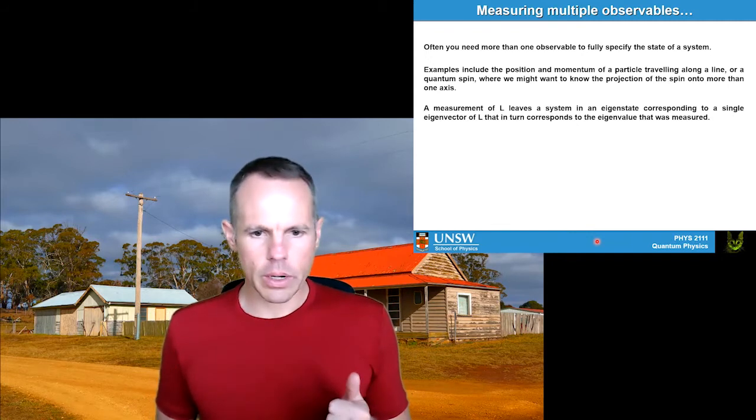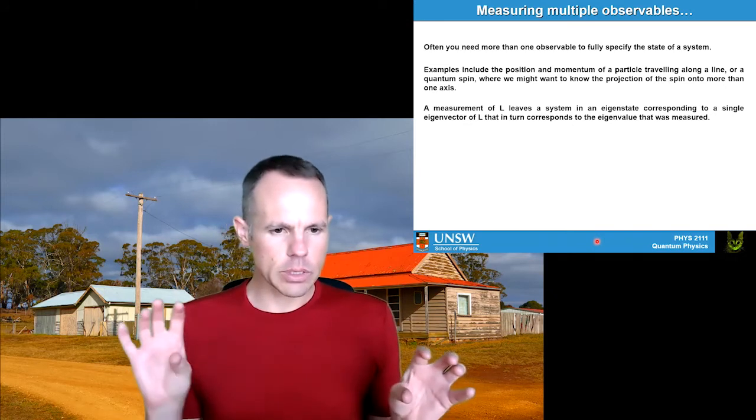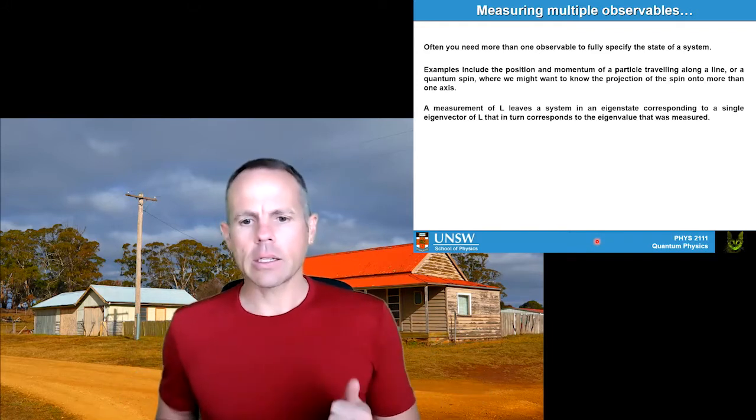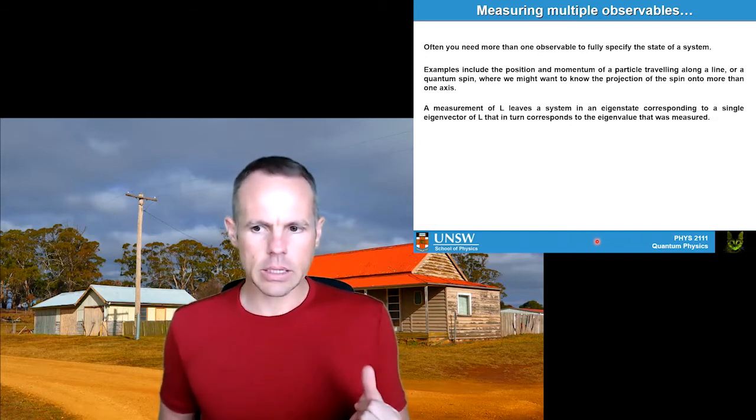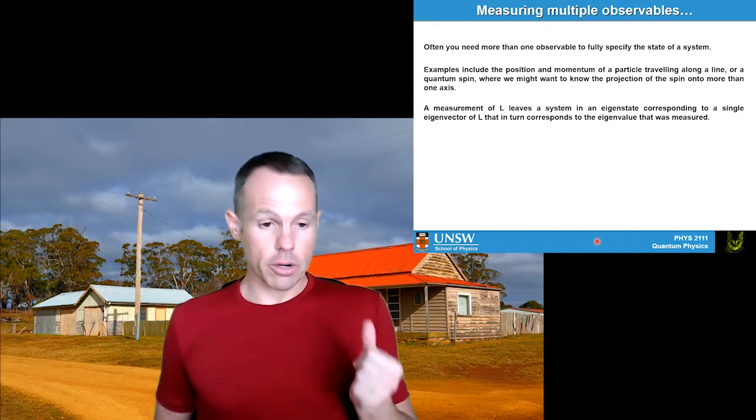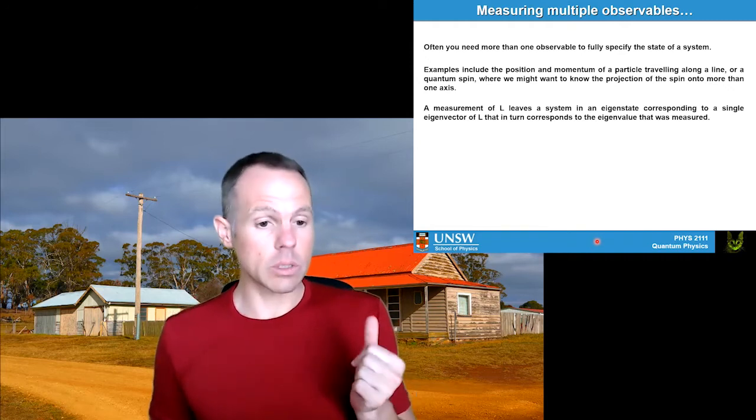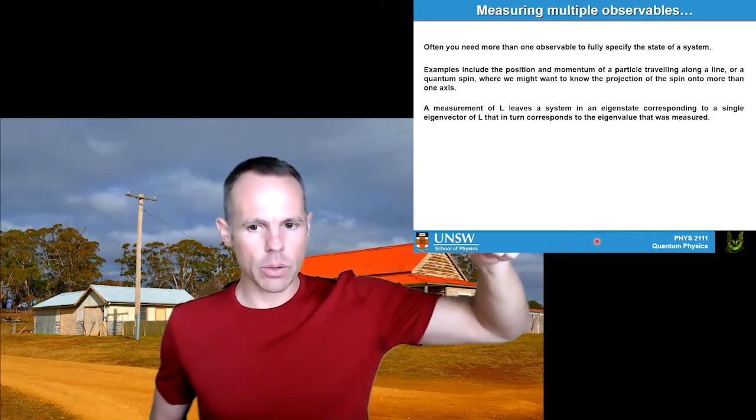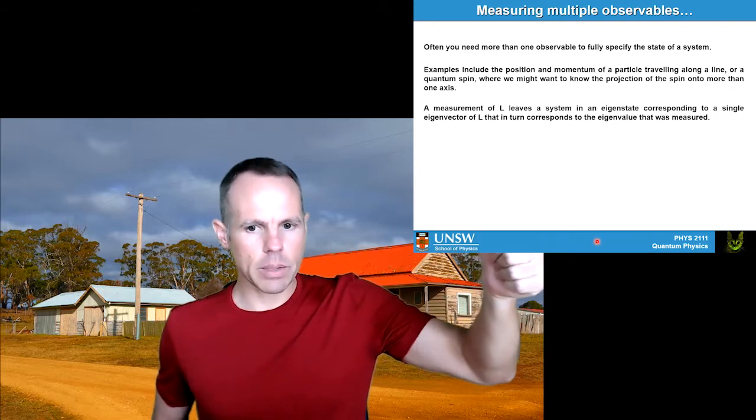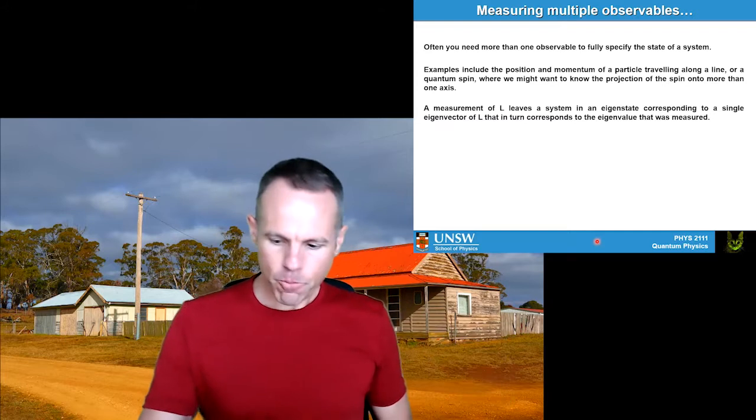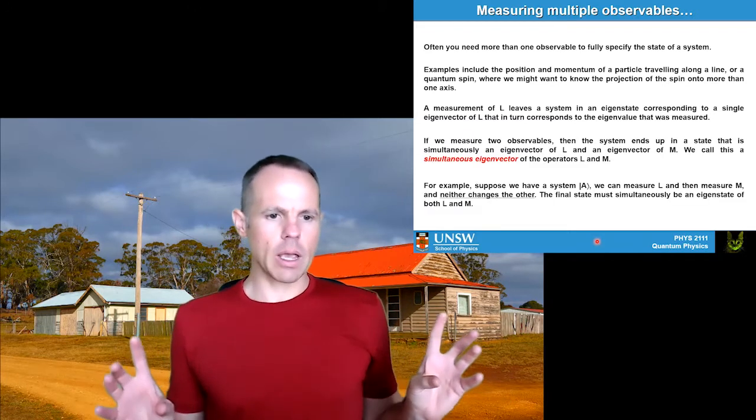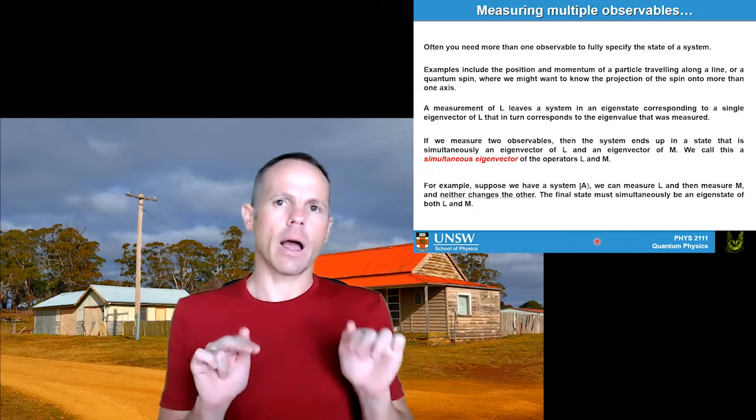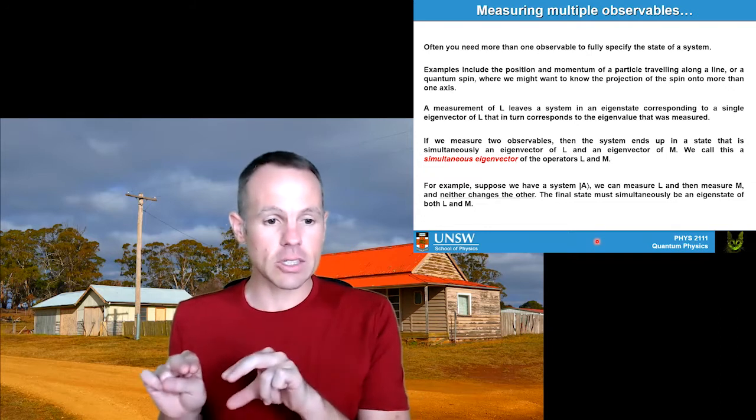So let's start from the position that we already know from our discussion of operators earlier, which is that every observable is connected to an operator and we can have some generic operator that we call L that's an observable measurement of a system. And so what we know is that a measurement of L leaves the system in an eigenstate corresponding to a single eigenvector of L that corresponds to whatever the eigenvalue was that was measured. So if we think back to our spin, it may be in some arbitrary superposition. We'll do a measurement of the angular momentum component along Z, and if we get a plus one, that means it must be in the upstate and that measurement leaves that in the upstate.